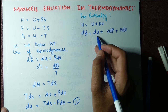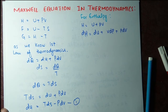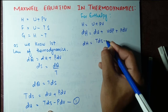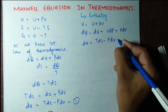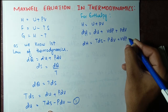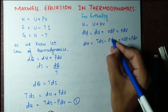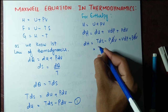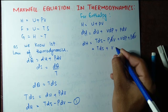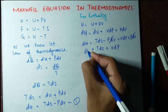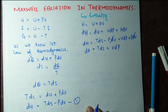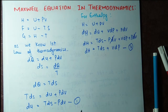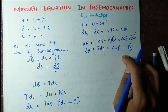Substituting the value of dU from equation number one, dH equals T dS minus P dV plus V dP plus P dV. The minus P dV and plus P dV cancel out, giving dH equals T dS plus V dP. This is equation number two.